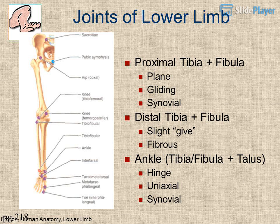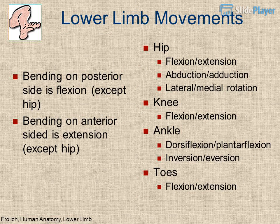Lower limb movements include hip and knee flexion/extension, abduction/adduction, and lateral/medial rotation. The ankle performs dorsiflexion/plantar flexion and inversion/eversion. For the toes: bending on the posterior side is flexion, except at the tip; bending on the anterior side is extension, except at the tip.